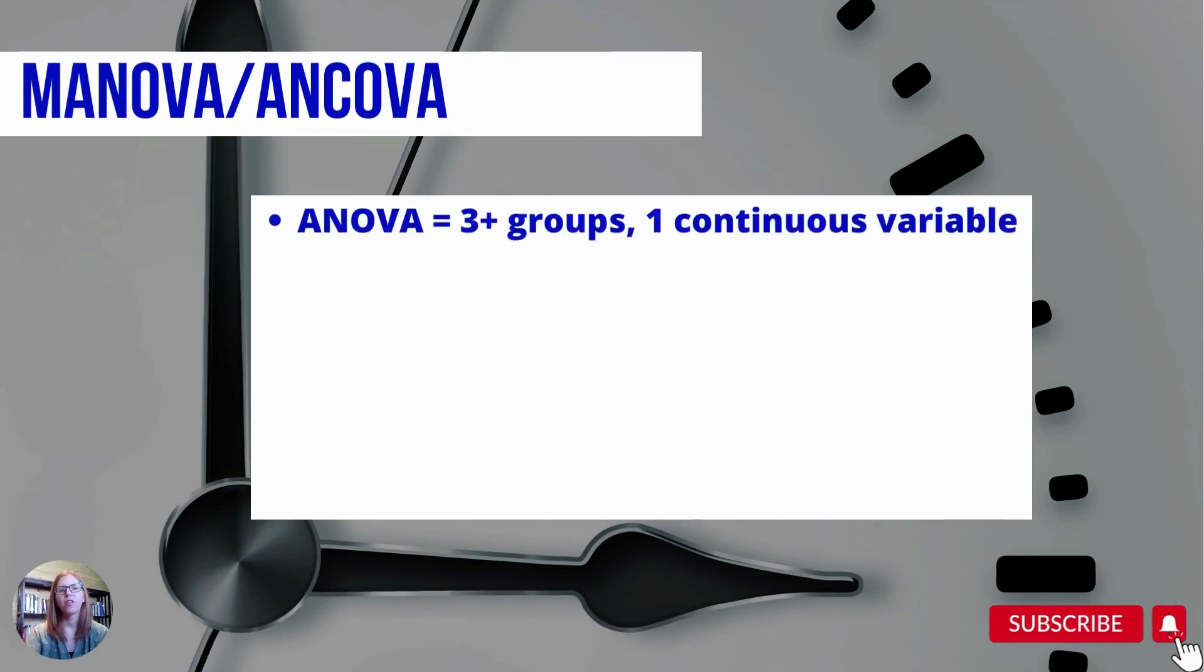So first, let's look at ANOVA. And if you're interested in learning more about ANOVA and the underlying principles behind this statistical analysis, you can check out my other video on ANOVA. But for this video's purposes, I'm just going to spell out what your data needs to look like when you're trying to use each of these statistical analyses. So for an ANOVA, you would have three or more groups, and you would be looking at differences on one continuous variable.